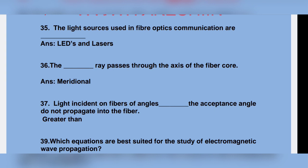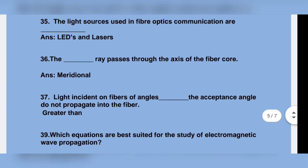The meridional ray passes through the axis of the fiber core. Light incident on the fiber at angles greater than the acceptance angle do not propagate into the fiber.